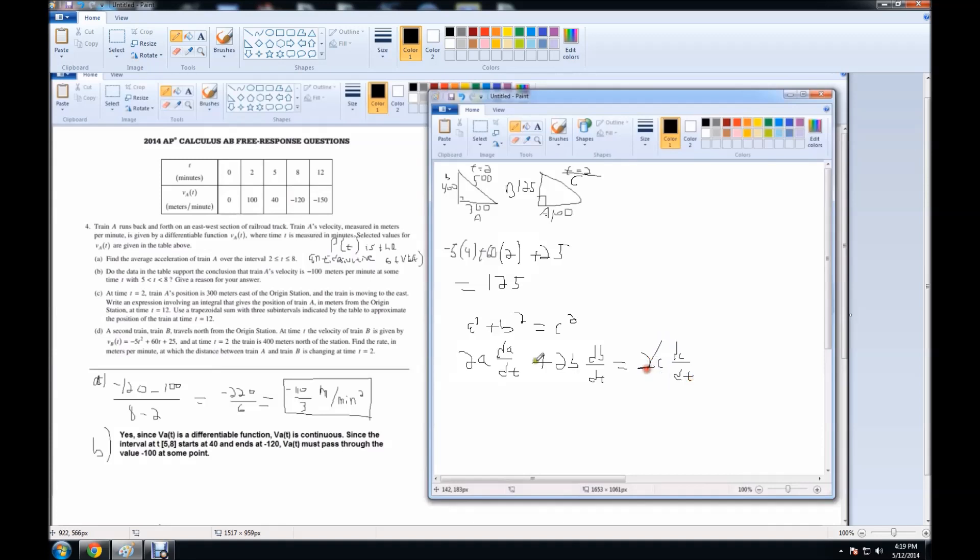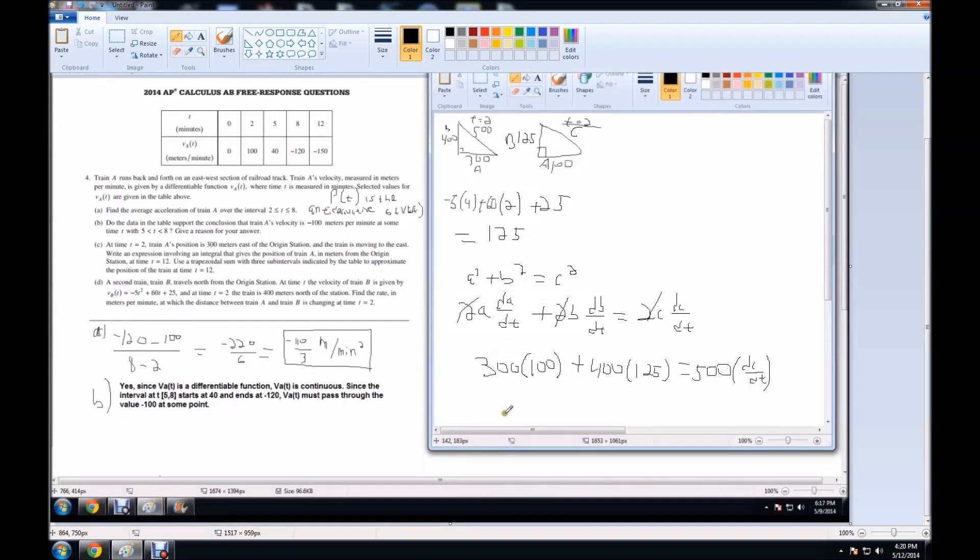Now, let's plug in values for everything we have. A is 300, dA/dt is 100, plus B, which is 400, times dB/dt, which is 125, is equal to C, which is 500, times what we're trying to find, which is dC/dt.